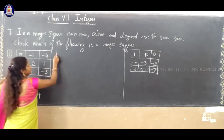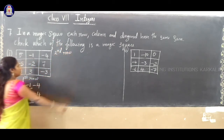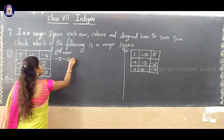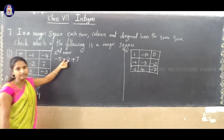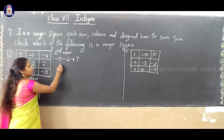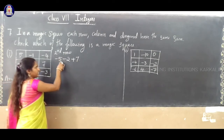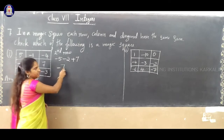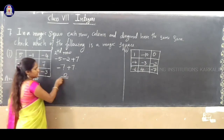Second row: the numbers are minus 5, minus 2, plus 7. Minus 5 and minus 2 have the same sign, so we add: minus 5 minus 2 gives minus 7. Then minus 7 plus 7 — different signs, subtraction. 7 minus 7 gives 0. So, the second row sum is 0.